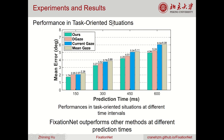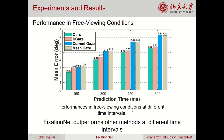This figure shows our model and other methods' performances in task-oriented situations at different time intervals. The y-axis refers to the prediction error. We can see that our model, shown as the green bars, outperforms other methods at different time intervals. We also evaluated the performance of our model on a free viewing dataset, and the results show that our model still outperforms other methods in free viewing conditions.